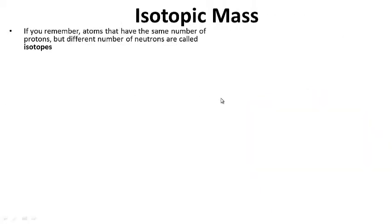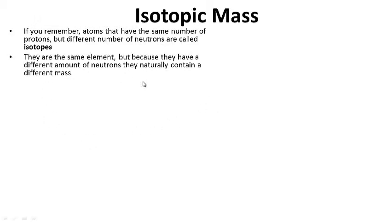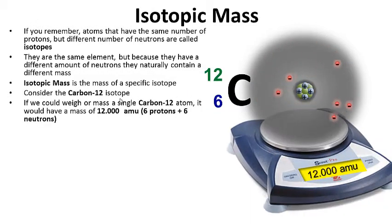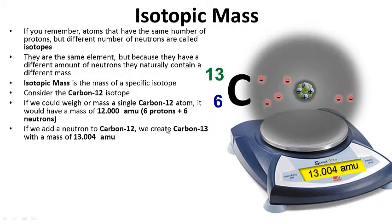Isotopic mass. Atoms that have the same number of protons but a different number of neutrons are called isotopes. They are the same element because they have the same number of protons, but because they have a different number of neutrons in their nucleus, they naturally contain a different mass. Isotopic mass is the mass of a specific isotope. Looking at carbon-12, the stable form of carbon: a single carbon-12 atom has a mass of 12 AMU — 6 protons and 6 neutrons. If we add a neutron to carbon-12, we create the carbon-13 isotope with a mass of 13.004 AMU.